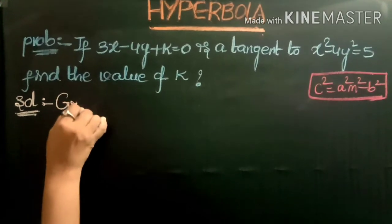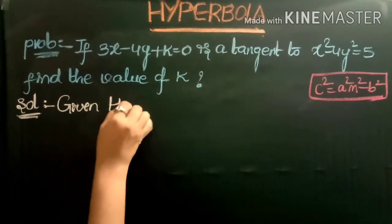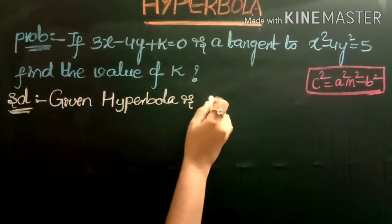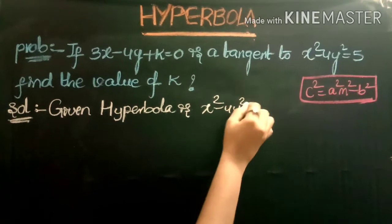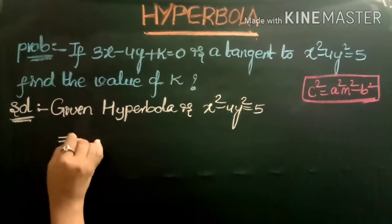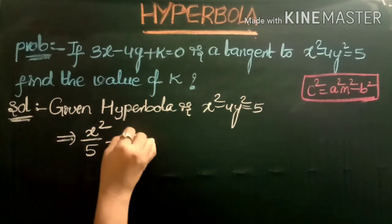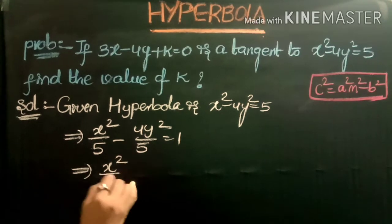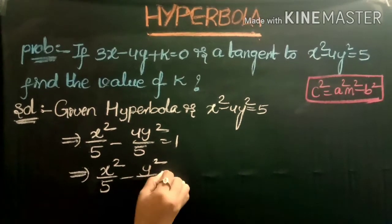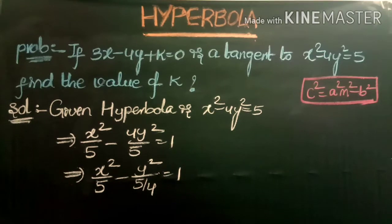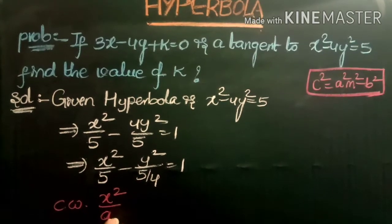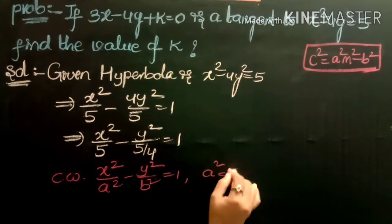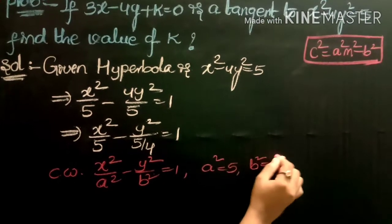The given hyperbola is x squared minus 4y squared equals 5. Dividing the entire equation by 5: x squared by 5 minus 4y squared by 5 equals 1, which gives x squared by 5 minus y squared by (5/4) equals 1. Comparing with x squared by a squared minus y squared by b squared equals 1, we get a squared equals 5 and b squared equals 5 by 4.